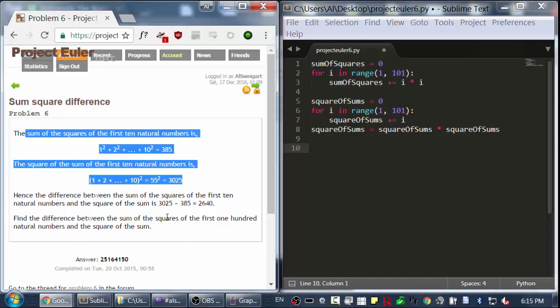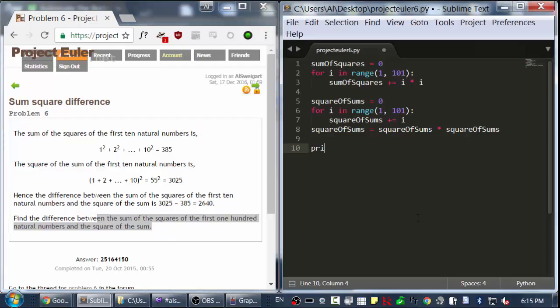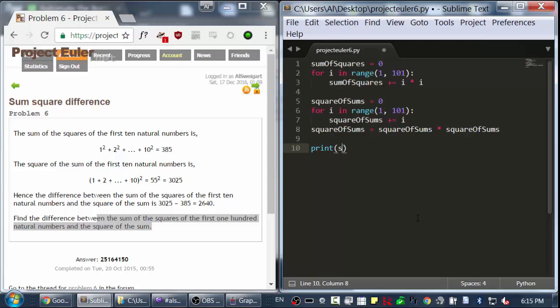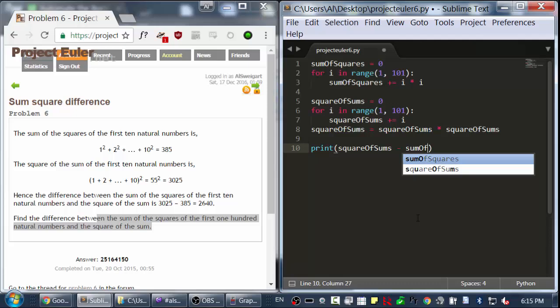Once we've done this for all the numbers for the first 100 natural numbers, now it wants us to find the difference between them. So I'm going to print the square of sums minus the sum of squares.